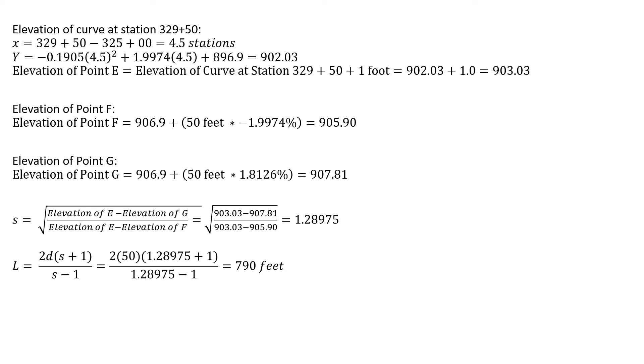We're going to find 2 times the distance from the PVI, which is 50 feet, times (S plus 1) divided by (S minus 1). That's going to give us a length of 790 feet. So to raise that point by one foot in elevation, we're going to change from our given length of curve to a length of 790 feet. Instead of 1000 feet, we need 790 feet to raise that point on the curve by one foot. It's a much shorter curve, around 210 feet shorter to be able to raise that point.